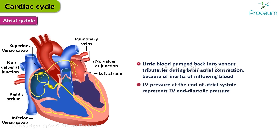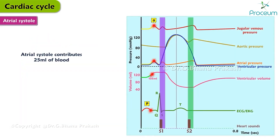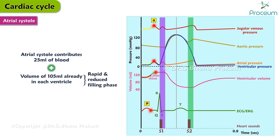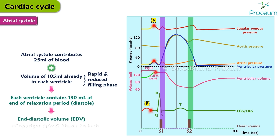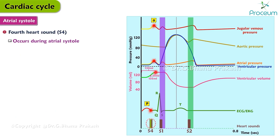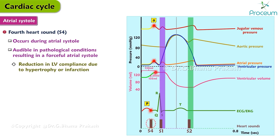The left ventricular pressure at the end of atrial systole represents the left ventricular end-diastolic pressure. Atrial systole contributes a final 25 mL of blood to the total volume of about 105 mL already in each ventricle, so each ventricle contains about 130 mL at the end of its relaxation period — the end-diastolic volume. The fourth heart sound occurs during atrial systole but is typically audible only in pathological conditions such as reduced left ventricular compliance due to hypertrophy or infarction.